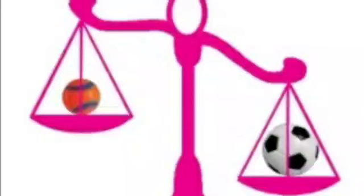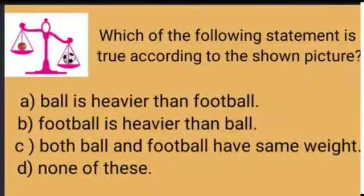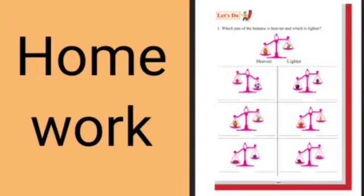My dear students, here we can see in the picture that the pan with football has gone down. It means football is heavier than ball, which is Option B. So we will put a tick on Option B. Now it is time for homework. You will solve the worksheet given at page number 141 from your home. Thank you.